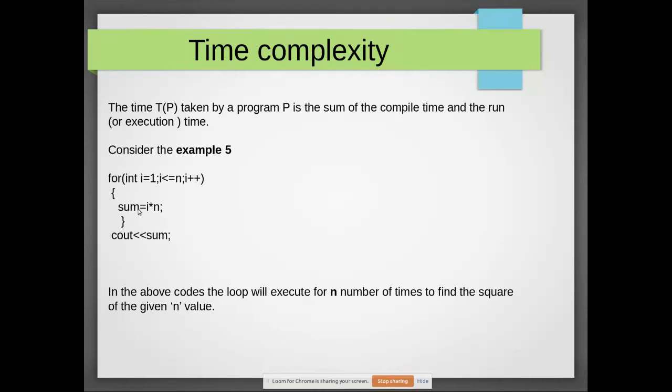We are not adding sum plus other things. What we are doing is first time 1×n, then second time 2×n, and so on until it reaches n. Finally, when i becomes n, it's n×n, which is the square of the given number.